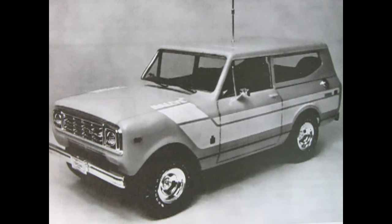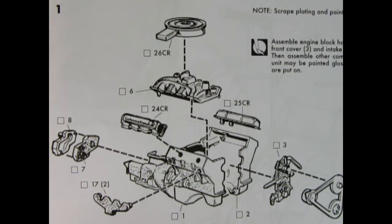So here we have this great big write-up, which I'm going to add down in the doobly-doo down below, so you guys can check that out instead of me reading it for 20 minutes. At the bottom of our instruction sheet, we get this wonderful three-quarter front view of our International Scout 2 in amazing black and white. Our first step is to build the wonderful engine block. It says to note: scrape plating and paint from glue joints.